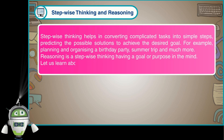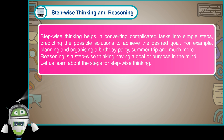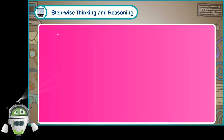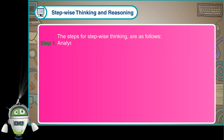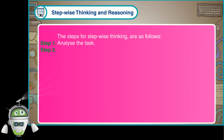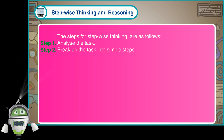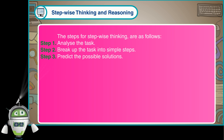Let us learn about the steps for step-wise thinking. The steps for step-wise thinking are as follows: Step 1 - Analyze the task. Step 2 - Break up the task into simple steps. Step 3 - Predict the possible solutions.